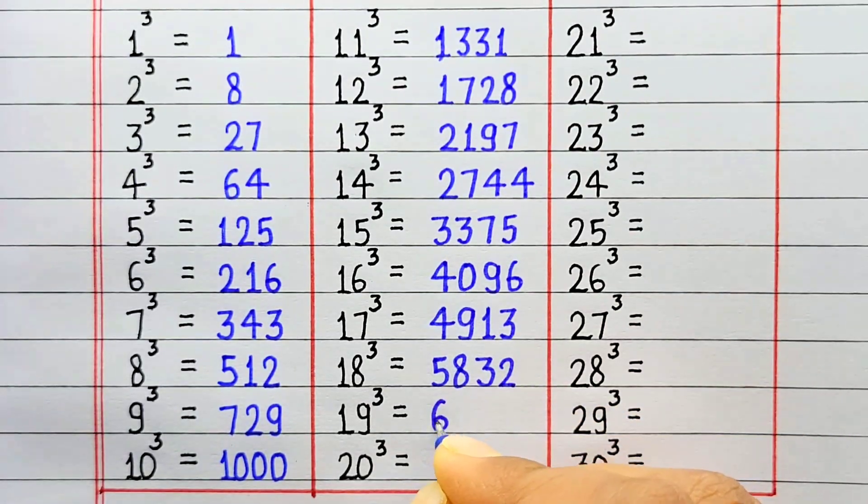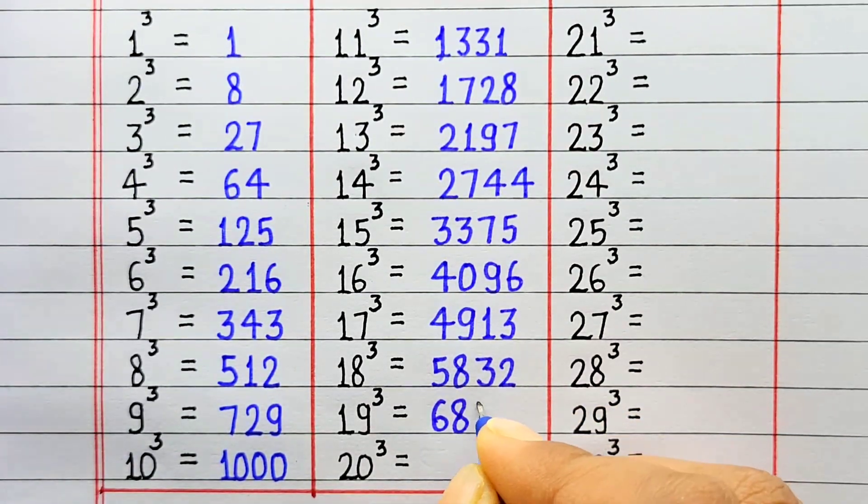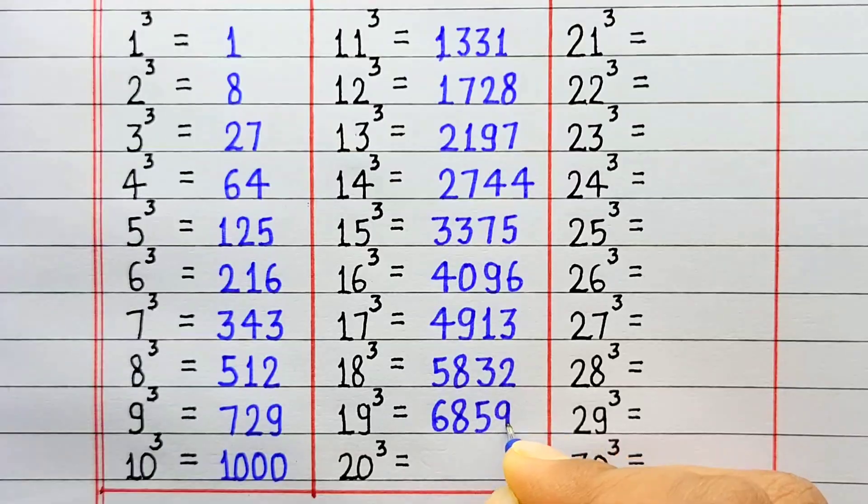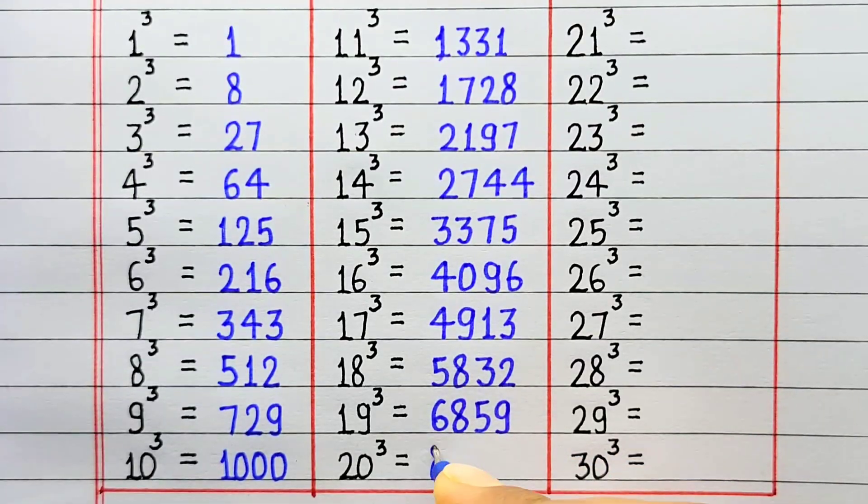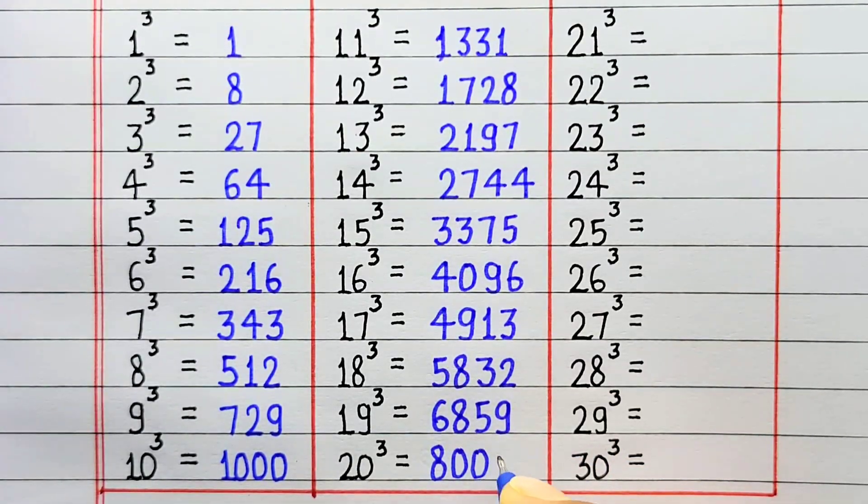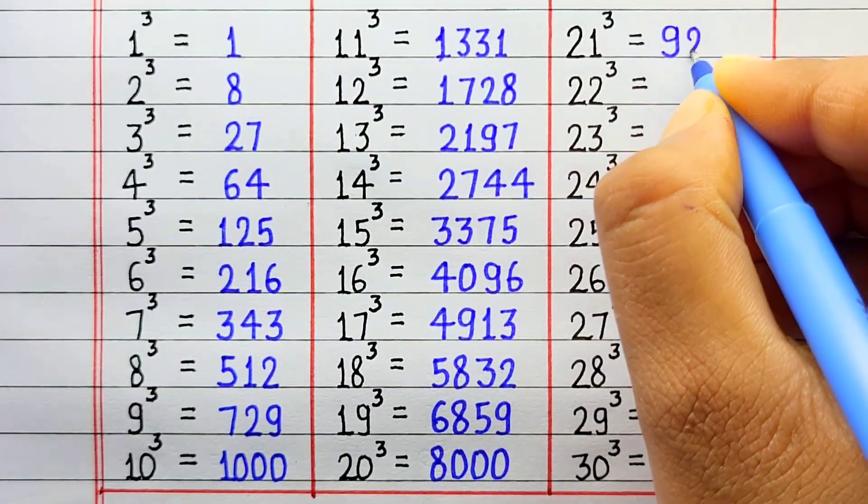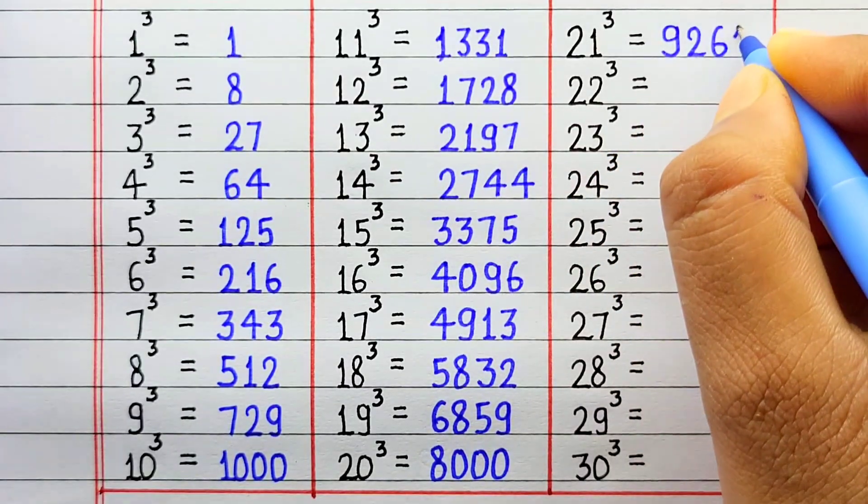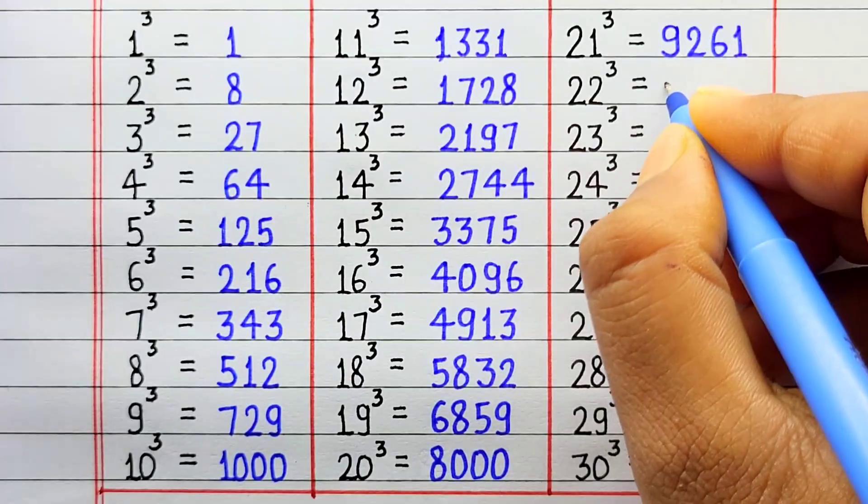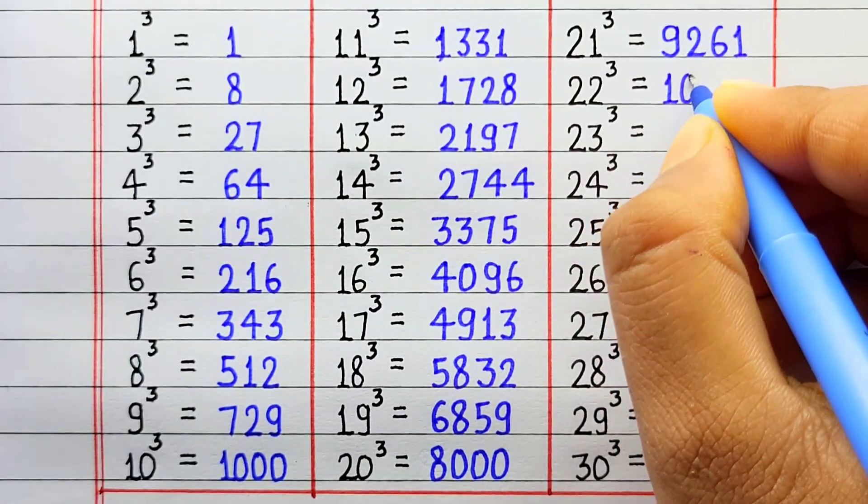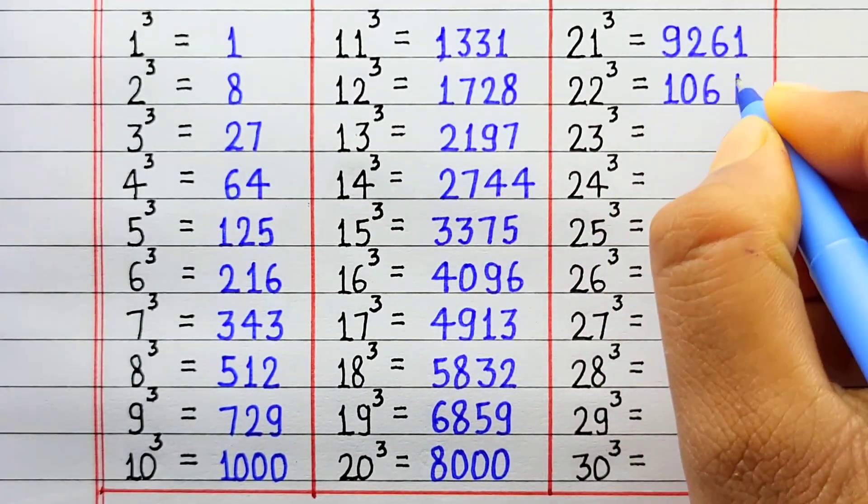Cube of 19 is 6859. Cube of 20 is 8000. Cube of 21 is 9261. Cube of 22 is 10648.